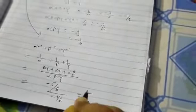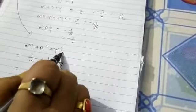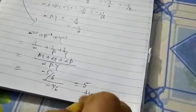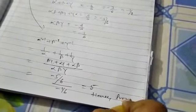And the value of alpha to the power minus one, beta to the power minus one, plus gamma to the power minus one is equal to five. Hence, proved. So, in this way, you just observe that we can solve this problem.